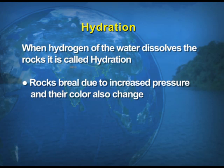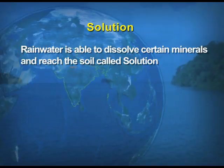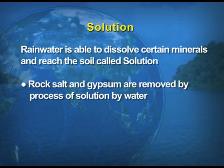Next is hydration. When the hydrogen of the water dissolves the rocks, that is known as hydration. Due to this process, rocks break due to increased pressure, and it also results in a change in the coloring of the rocks. The last is solution. When soluble minerals get dissolved in water, that is known as solution. Rainwater is able to dissolve certain minerals and they reach the soil. For example, rock salt and gypsum are minerals which get easily dissolved in water.